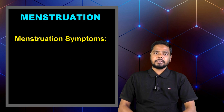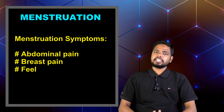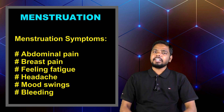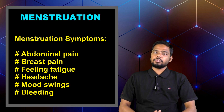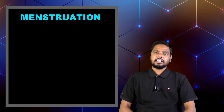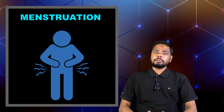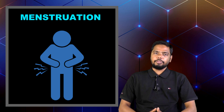The most common symptoms of menstruation are abdominal pain, breast pain, feeling fatigue, headache, mood swing, and bleeding from the private part. Symptoms of both cycles are similar, but period symptoms can be harsher than ovulation.